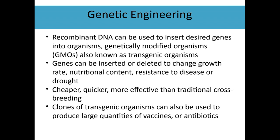Nutritional content could be improved — the very first GMO was actually to include a vitamin in rice that doesn't normally occur in it, in an area that had malnourishment. GMOs could be used to resist diseases or for drought resistance. As climate change becomes a bigger issue and some places are drier, we can modify food so that places having difficulty meeting food needs are able to. It's cheaper, quicker, and more effective than traditional crossbreeding because you can say 'this is the gene I want' and put it right in there, being very precise.